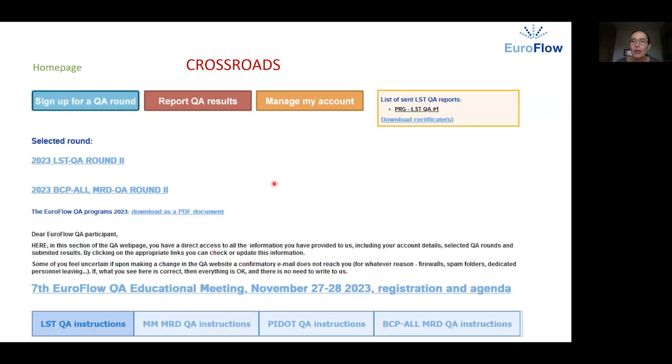When you log in the top of your home page looks like this. It is like a crossroads where you can use the links to get to the tasks you need. You can download a PDF describing the programs for the particular year. You can read the instructions for the individual QA schemes and when you decide you want to sign up for a particular round of your interest. You click on the sign up for a QA round link.